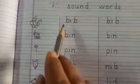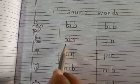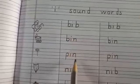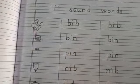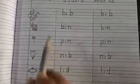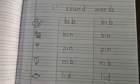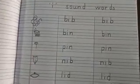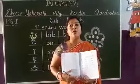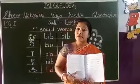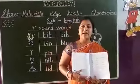See here: B-I-B — bib, B-I-N — bin, P-I-N — pin, N-I-B — nib, L-I-D — lid. These are I-sound words, three-letter words. So students, go through this video. Learn the I-sound words with the phonic sound. Take care and bye-bye.